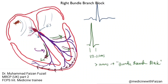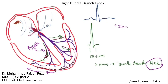The important concept to understand is that the bundle branch doesn't have to be blocked in order for the QRS to become widened. The key is that one of the bundles has to be a little slower than the other, and then you'll get this phenomenon where the QRS takes longer, because the signals are going down slower cell-to-cell connections instead of the rapid Purkinje system. The word 'block' is a bit of a misnomer — you can have a little bit of delay or a lot of delay, and that's going to affect how wide the QRS is. That's what incomplete bundle branch block means.